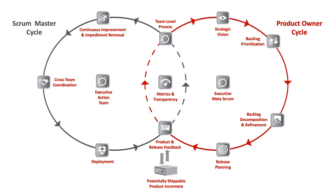Scrum at Scale is a framework for scaling Scrum — it radically simplifies scaling by using Scrum to scale Scrum. In Scrum, care is taken to separate accountability of the what from the how; the same care is taken in Scrum at Scale, so that jurisdiction and accountability are expressly understood in order to eliminate wasteful organizational conflict. Scrum at Scale consists of components that allow an organization to customize their transformational strategy and implementation. It contains two cycles: the Scrum Master cycle (the how) and the Product Owner cycle (the what), each touching the other at two points, producing a powerful framework for coordinating multiple teams along a single path.